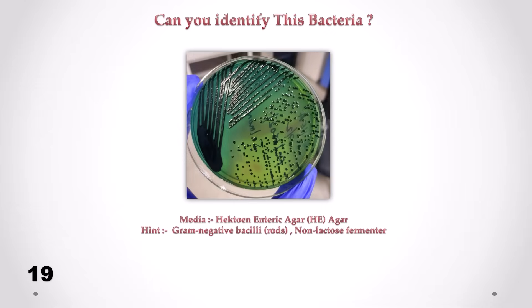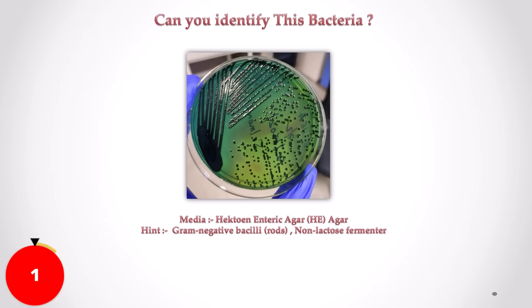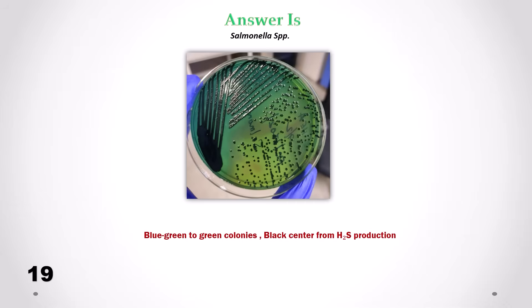Can you identify this bacteria? Correct answer is Salmonella. We can see blue-green to green colonies with black centers from H2S production.